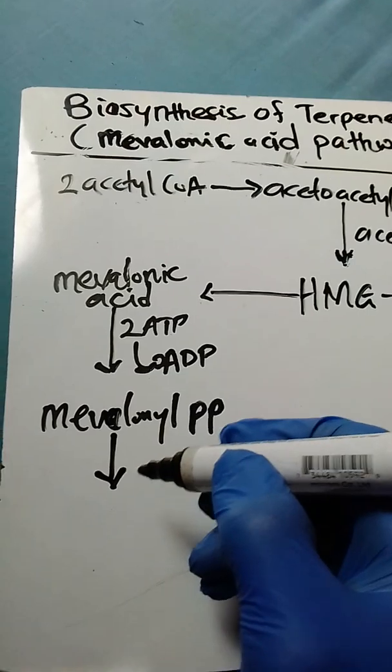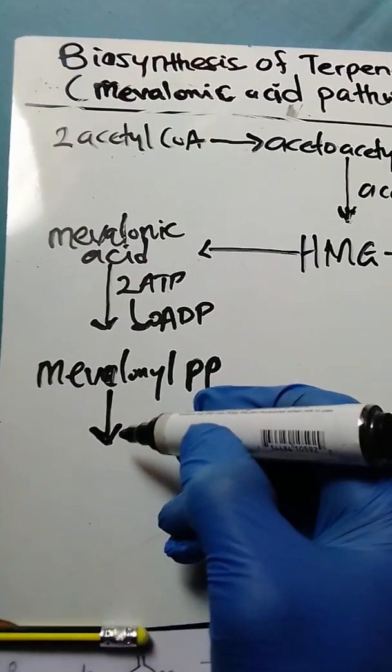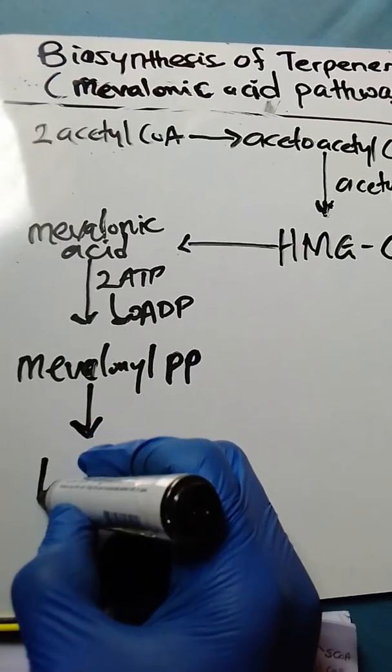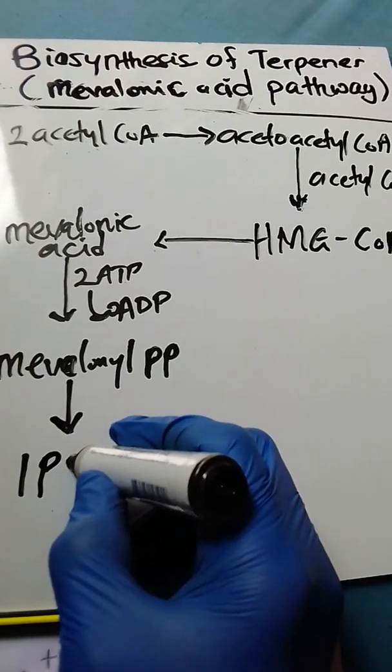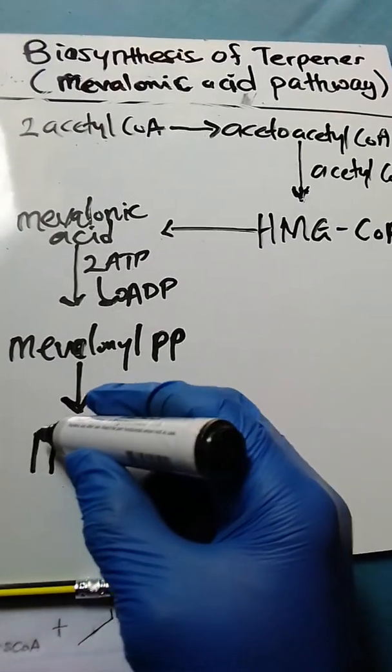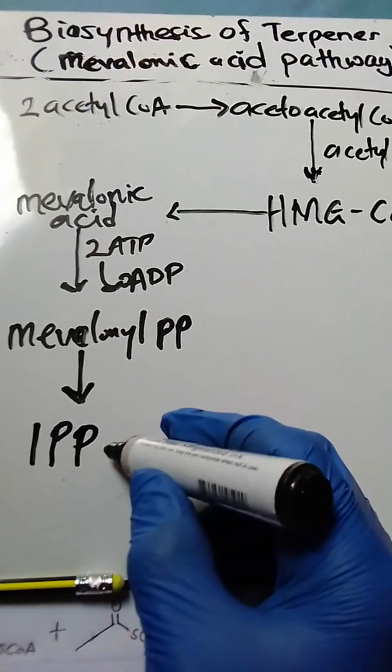The mevalonate pyrophosphate then undergoes decarboxylation and dehydration to produce what you call IPP, isopentenyl pyrophosphate.